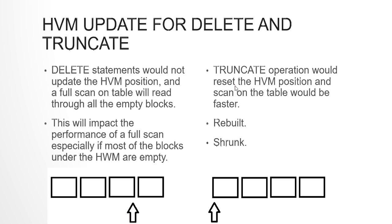Why doesn't Oracle reset the HWM after a DELETE operation? It is an assumption that the rows being deleted would be on the rightmost side of the blocks, but practically that is not possible — the deleted rows might be anywhere, in the middle or at the start of the blocks. To reset the HWM, Oracle would have to find the block with maximum data, compare it with the current HWM, and then reset it — that involves a lot of processing. We don't want all this processing to happen after every delete. If you want to resize the table, you can use the REBUILD or SHRINK functionality, but doing so after every delete would be very time-consuming and wasteful of resources.